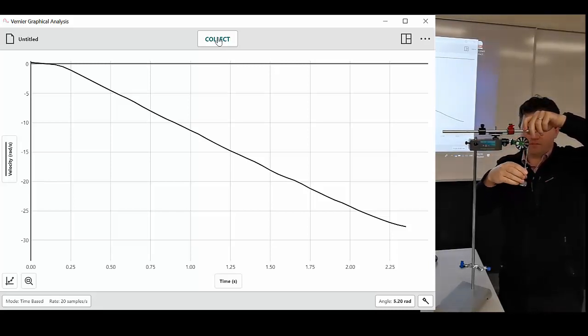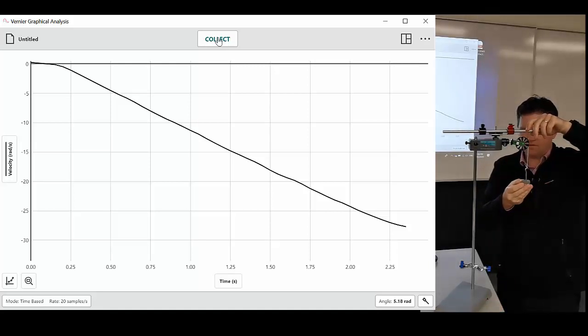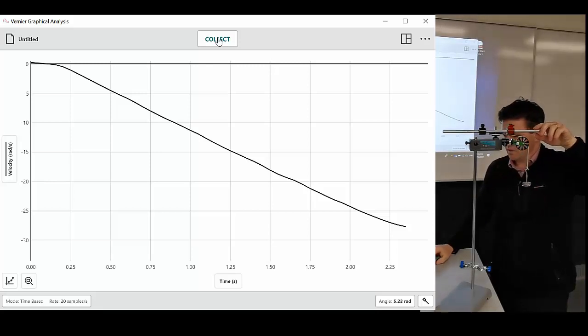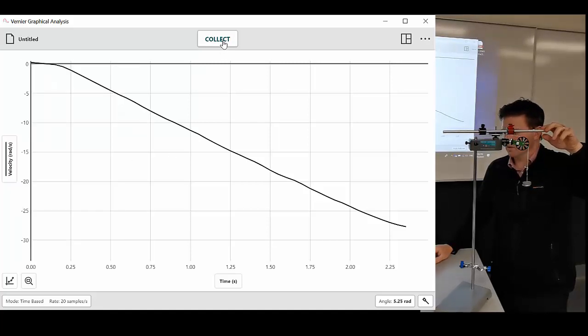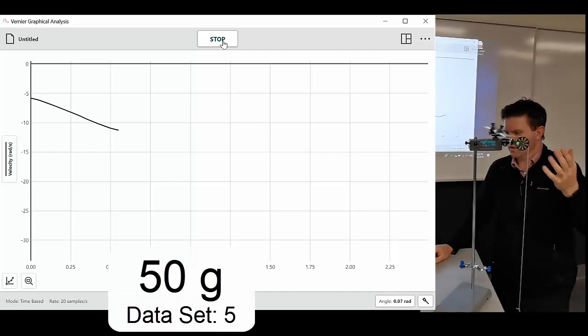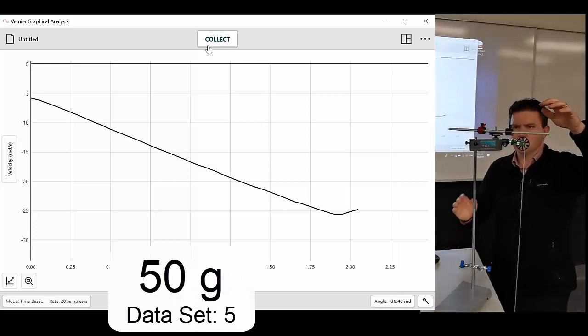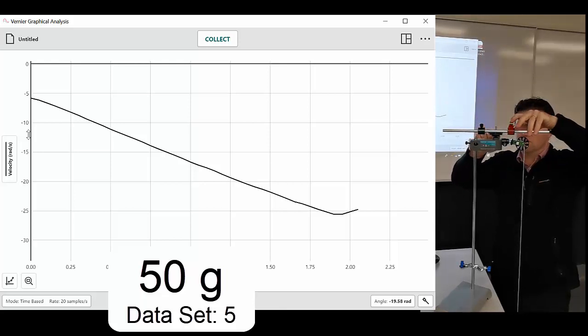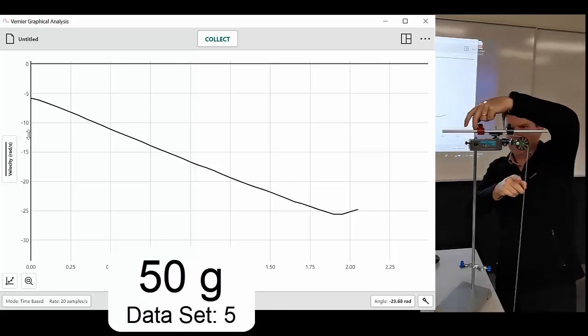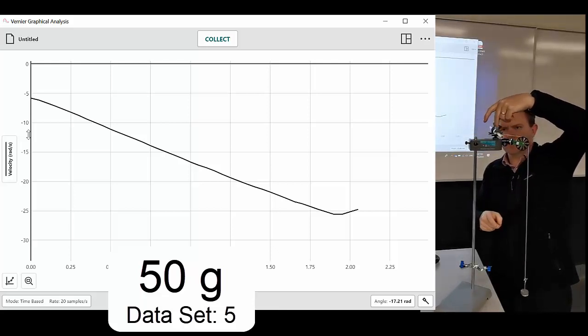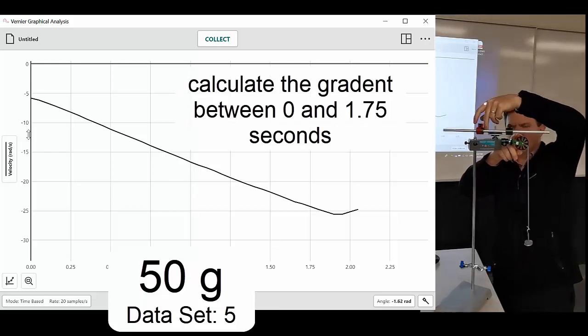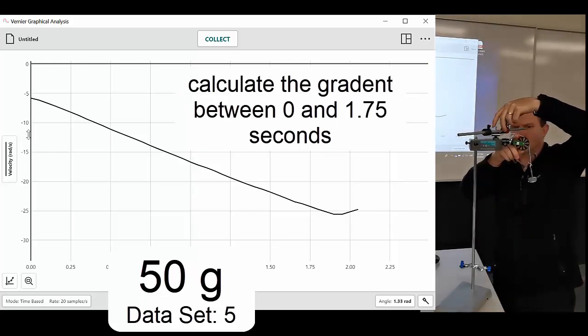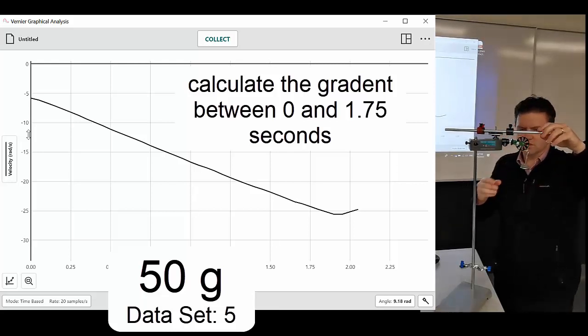I'll take another mass off. So now I've got 10, 20, 30, 40, 50 grams on there. And for 50 grams I'm going to be on data set 5. Here we go. 3, 2, 1. So you see that it starts off at minus 5. That means I must have let it go before I hit collect. Does that affect our angular acceleration calculation? It would make it a little bit more complicated if we were doing that via a rotational kinematic equation. But because we're just using the graph, it's still just the gradient.